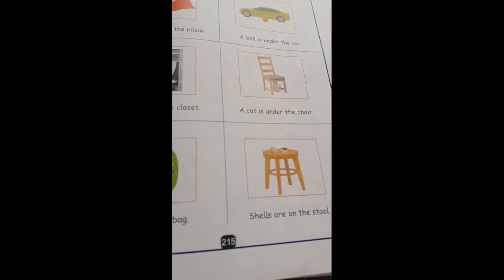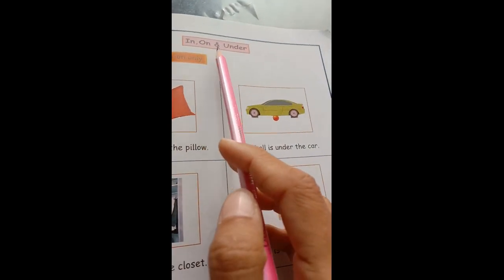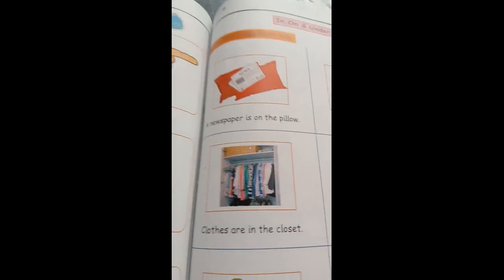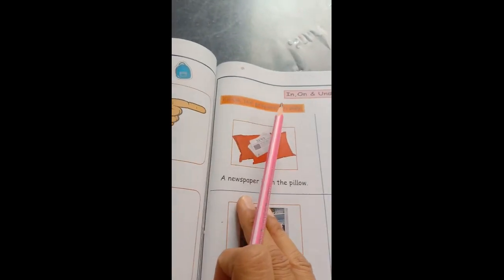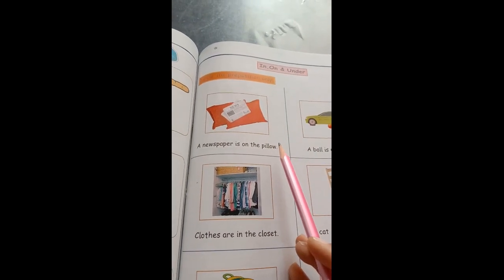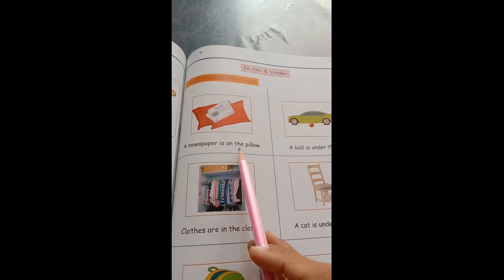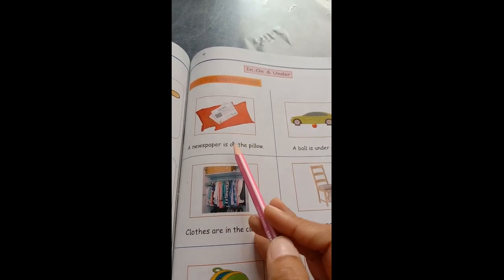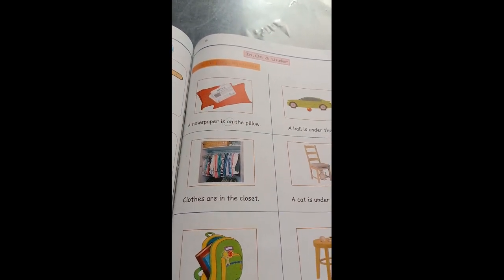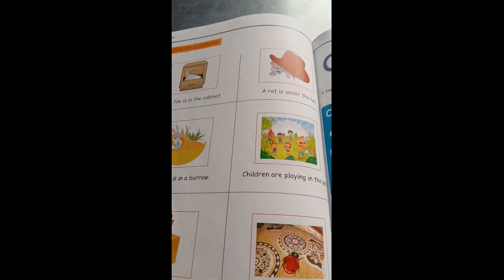And this is page number 215. And topic is, IN, ON and UNDER. Circle the preposition only. You have to circle the preposition only. In, ON and UNDER. A newspaper is on the floor. ON. This way, we will complete our work. Page number 216. It is the same work.